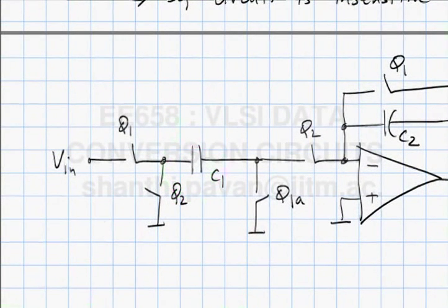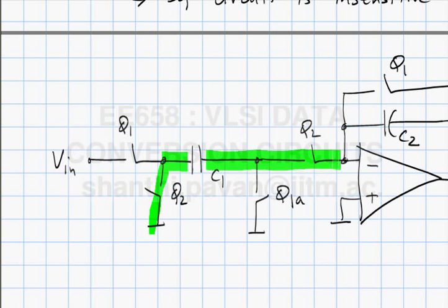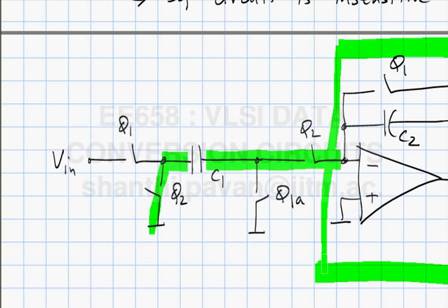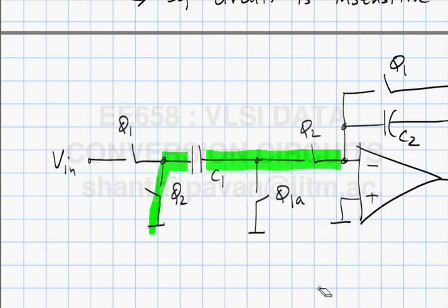During phi2 this path is on, and all charge across C1 is dumped onto the infinite capacitor. Then I open phi2 and there will be charge injection. The charge in both switches during phi2 is independent of signal because one is connected to ground and the other to virtual ground.